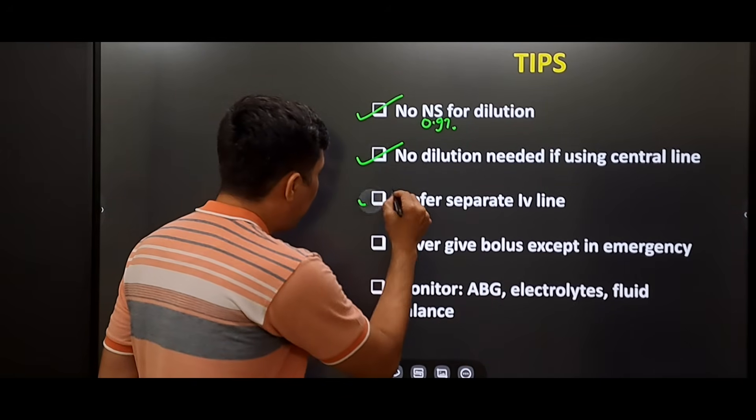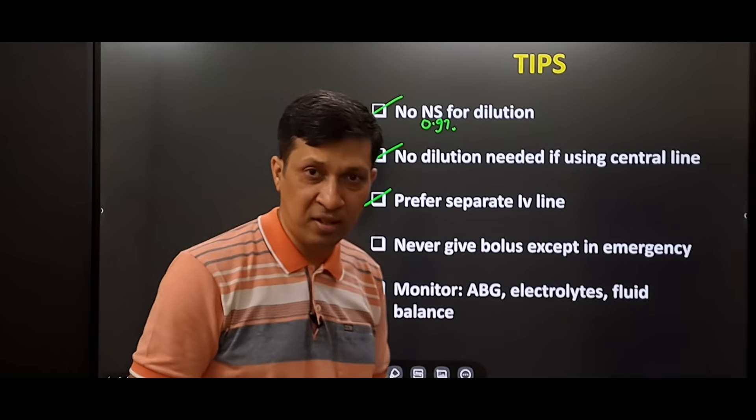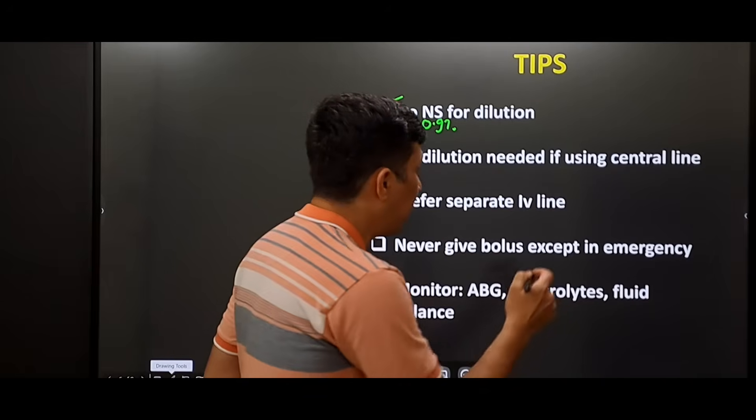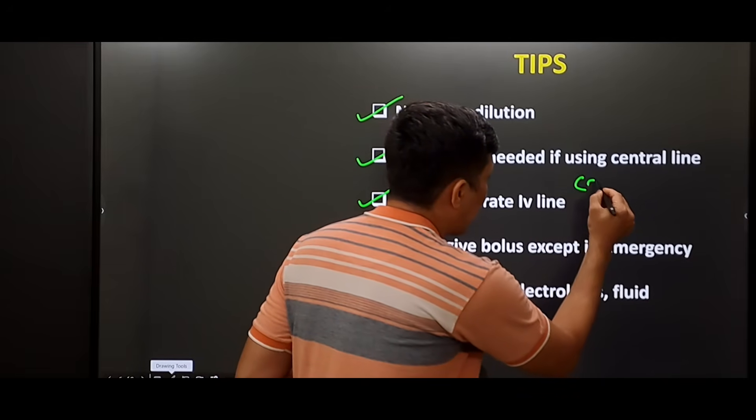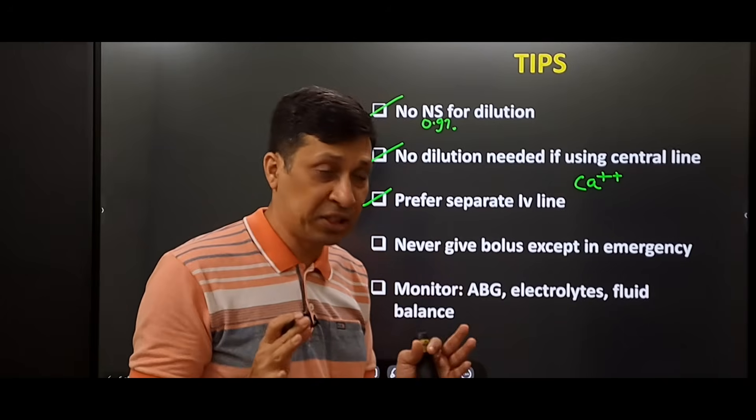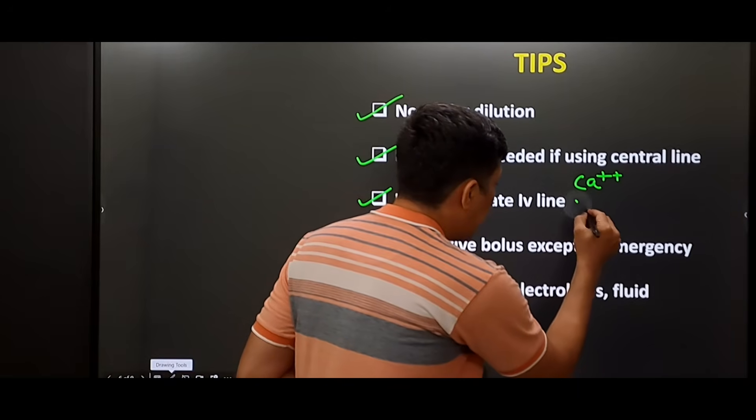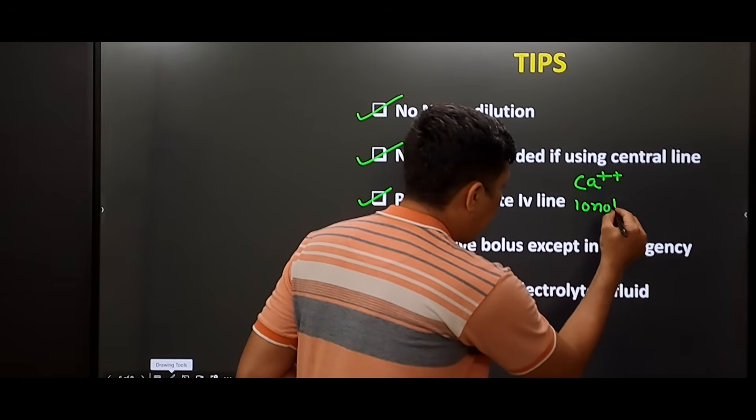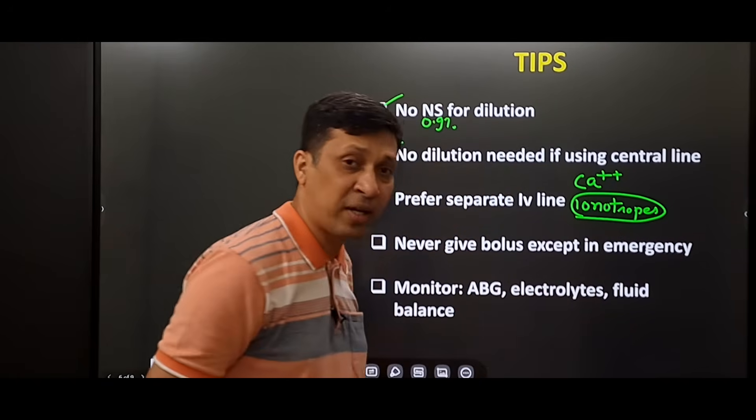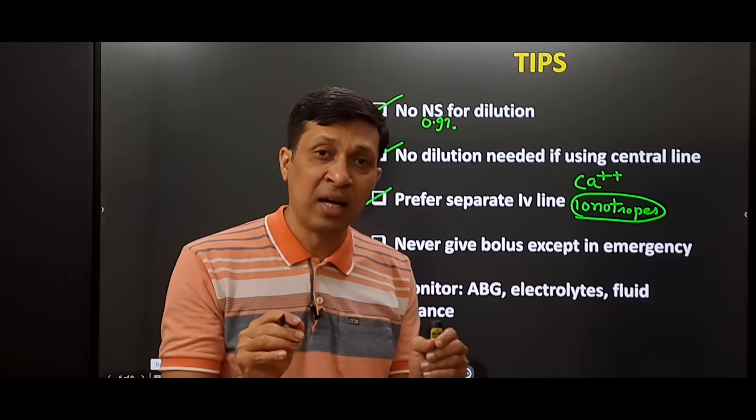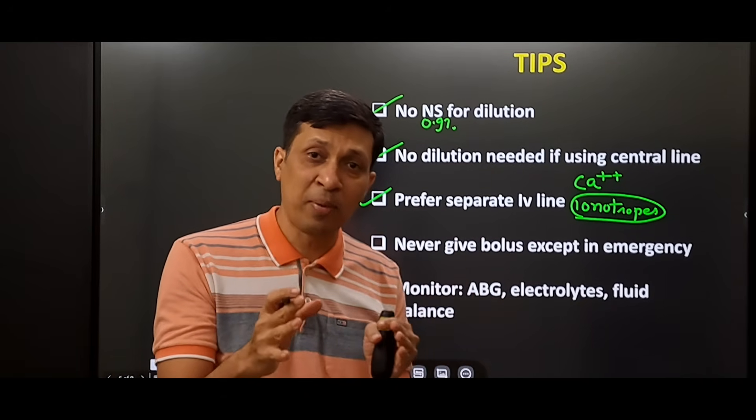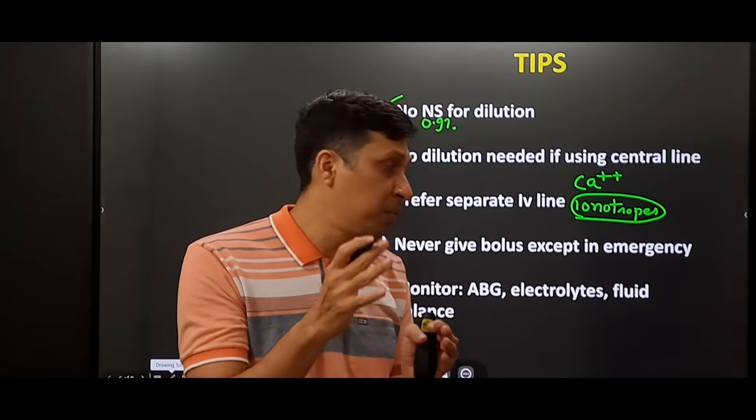Third, always prefer a separate IV line for this drug. If this drug is combined with some drugs, there can be problems. Like if you give this drug with drugs containing calcium, there can be precipitation. Or if you give this drug filled with certain inotropes, these drugs will not be effective because most inotropes are acidic in nature. If you combine this with the alkaline drug sodium bicarbonate, inotropes will not be effective.